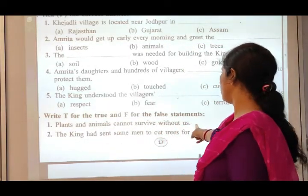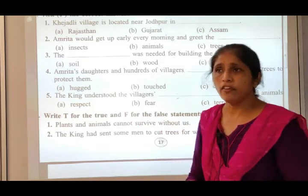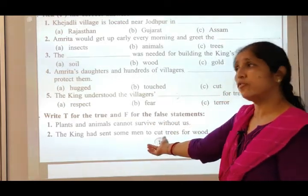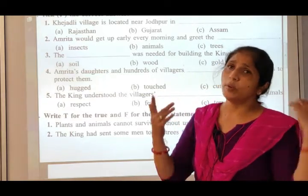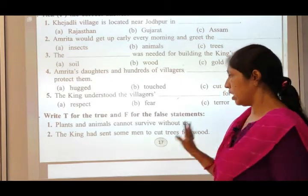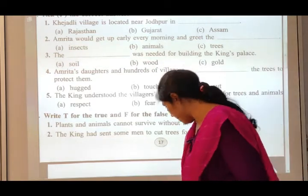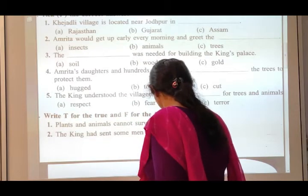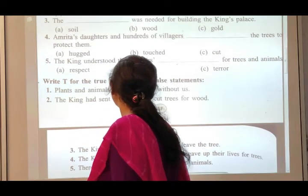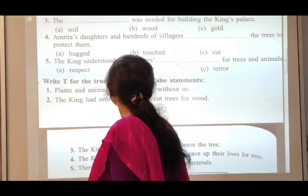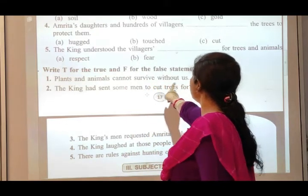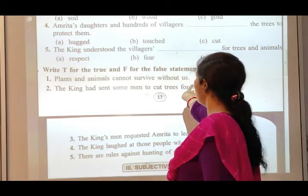Plants and animals cannot survive without us — but actually we cannot survive without them. Our life is totally dependent on plants and animals. So this statement is False. However, from one perspective you could say True as well, but False is more appropriate here.